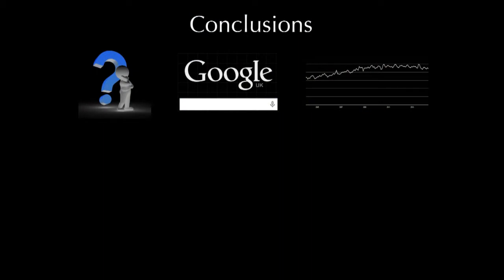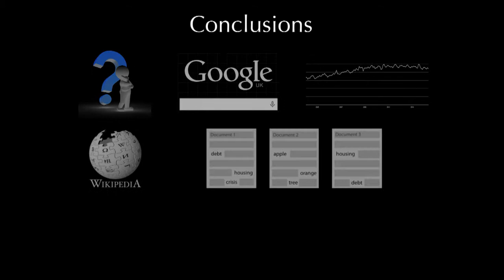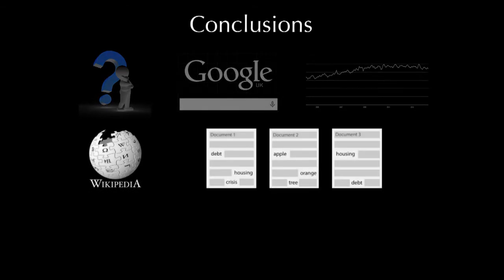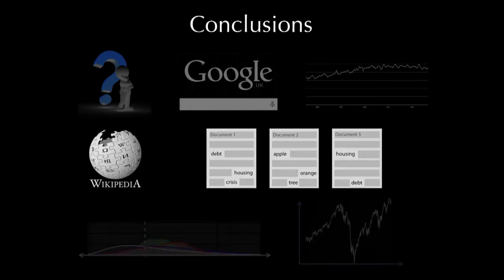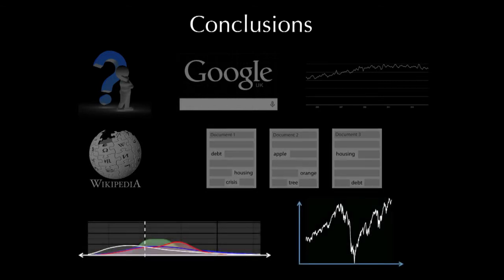To summarize: internet search data like from Google provide the intriguing possibility to study the information-gathering processes that precede real-world events. LDA is an effective means to reduce the dimensionality of keyword data when performing similar analyses, so that you study underlying semantic factors of importance. In this particular analysis, we find that search volumes relating to politics and business can be linked to subsequent stock market moves, at least in the S&P 500. Thank you all, and I'm happy to take any questions.